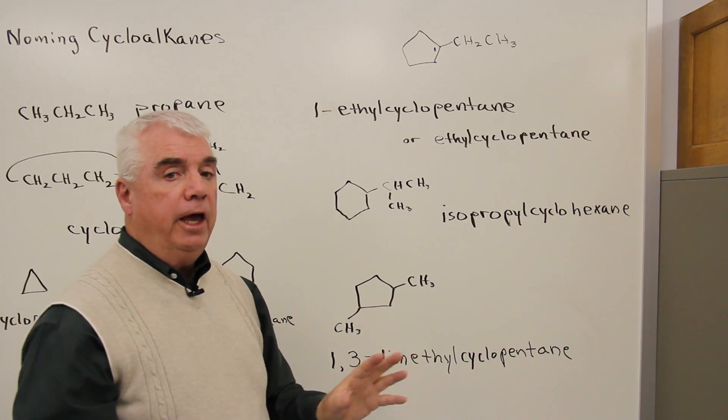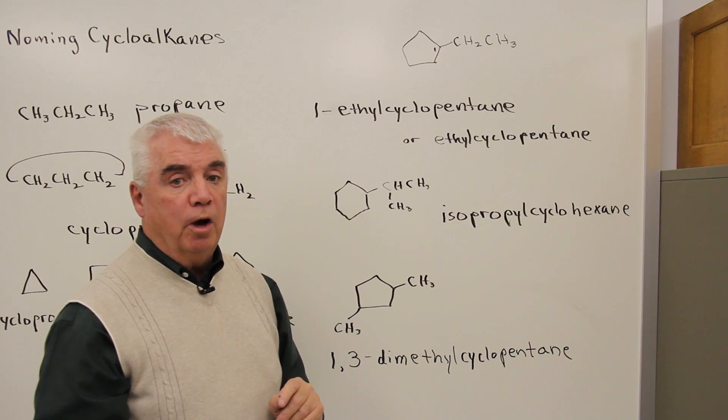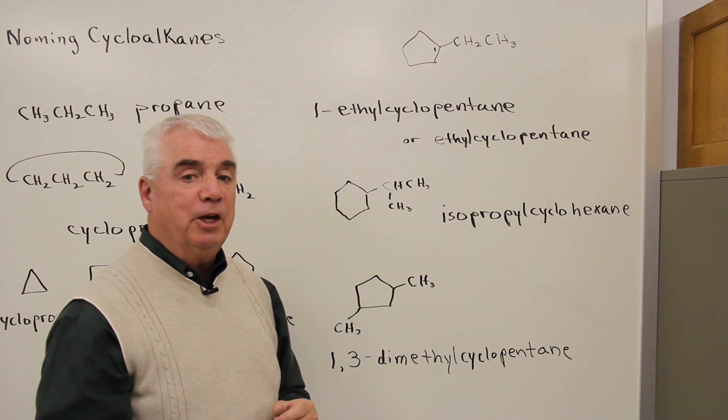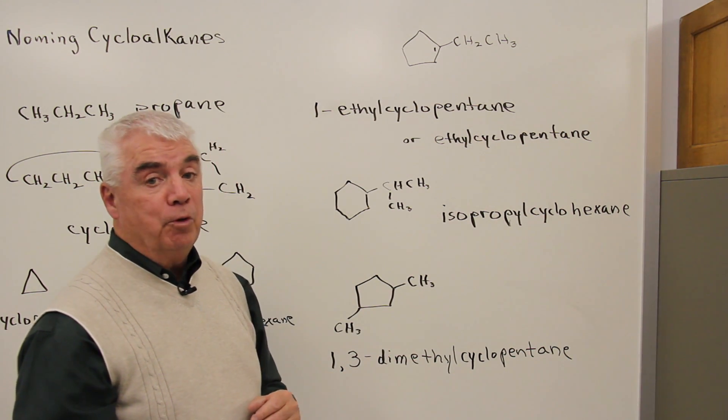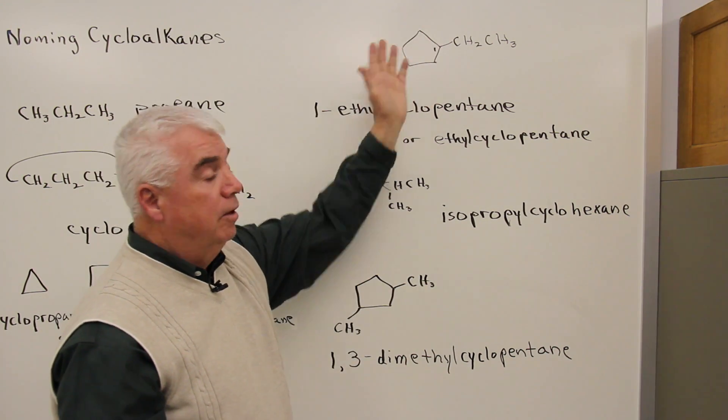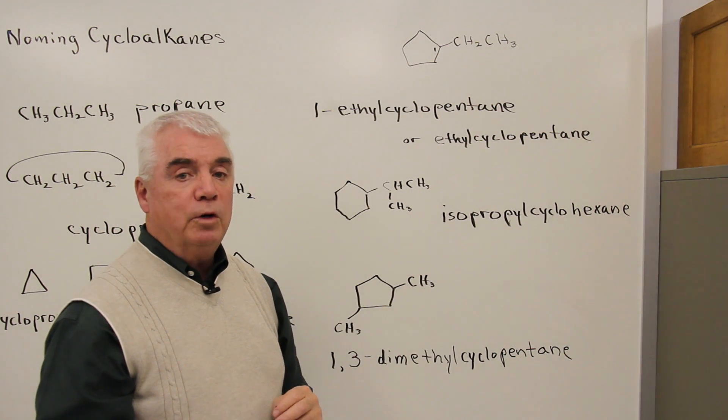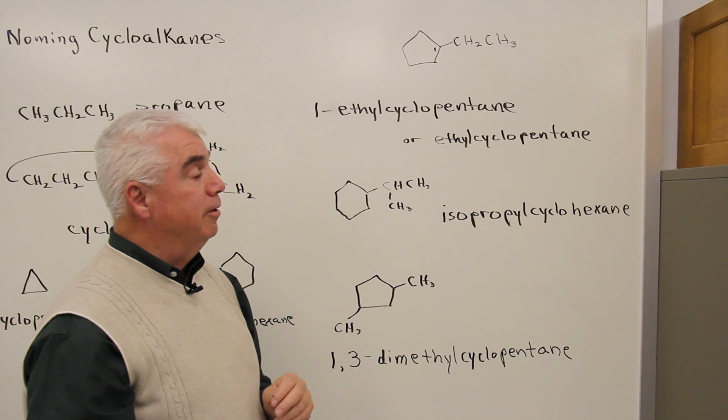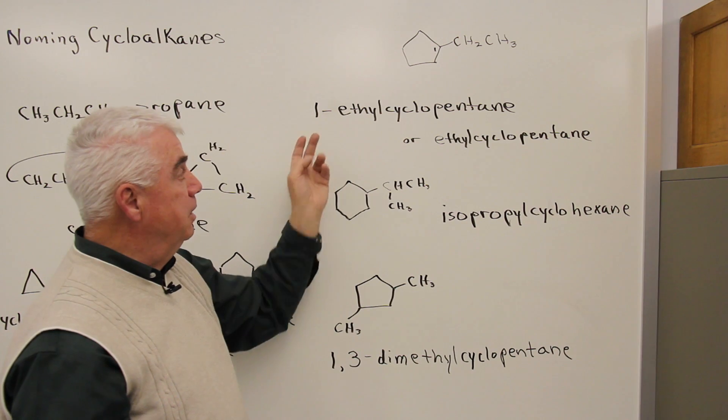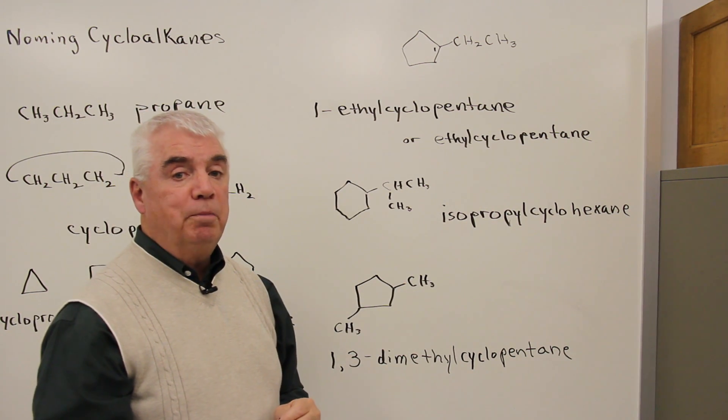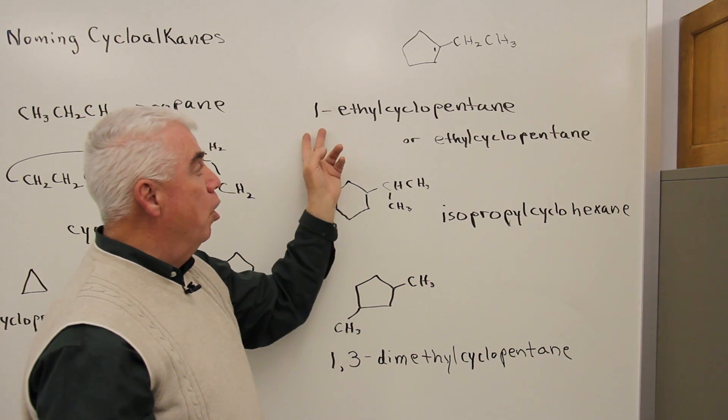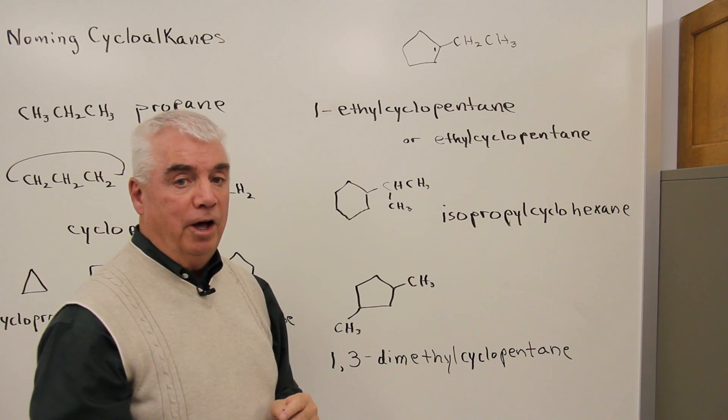In the alkanes, when we had an open chain structure, there were always two ways that we could number from the left or from the right. In a ring, we could start anywhere, and we'd want to start so that we gave the lowest number to the position of an attached group. That means if I have just one group attached to a ring, it's always going to be at position one.